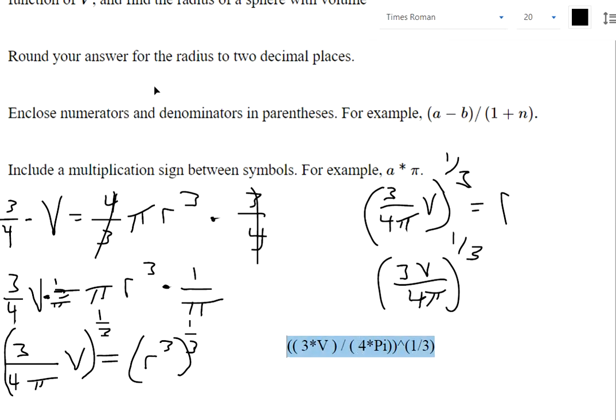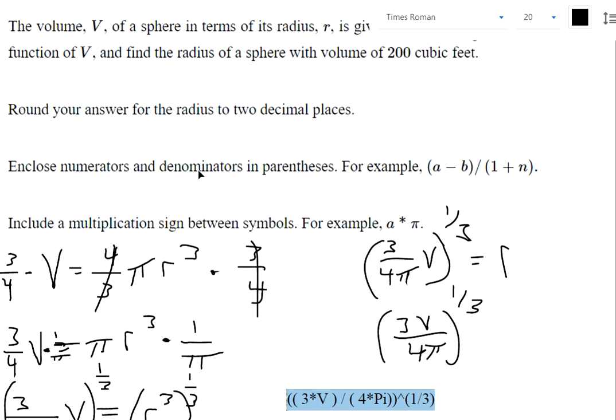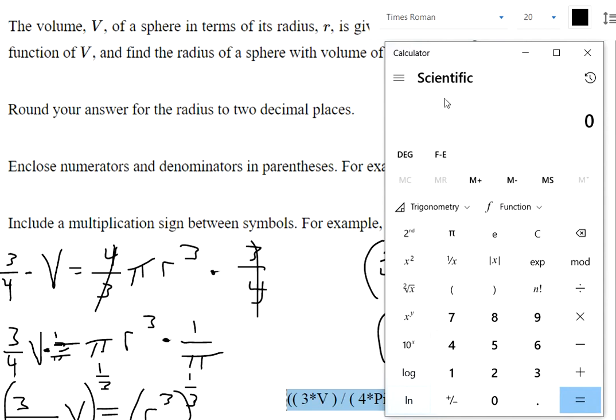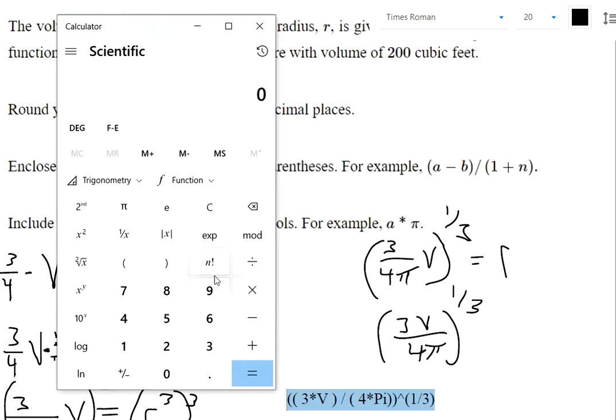Oh, and then the other part is find the radius of the sphere with a volume of 200. This one we don't have to keep the exact answer. We can type it in a calculator. So the volume is 200. So I'm plugging in 200 in for v. So 200 times 3, divide that 4 in the denominator, and then I'm going to hit enter. And I'm going to hit divide pi, and then hit enter again.